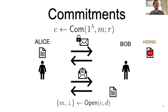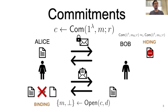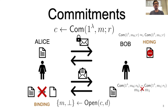The two required properties are hiding and binding. Hiding requires that the commit phase hides Alice's message: the commitment on M0 is computationally indistinguishable from a commitment on M1. Binding requires that Alice cannot open a commitment to a different message than the one she originally committed to. Formally, perfect binding says: if C is a commitment to M0, then C cannot also be a valid commitment to M1 where M0 ≠ M1.